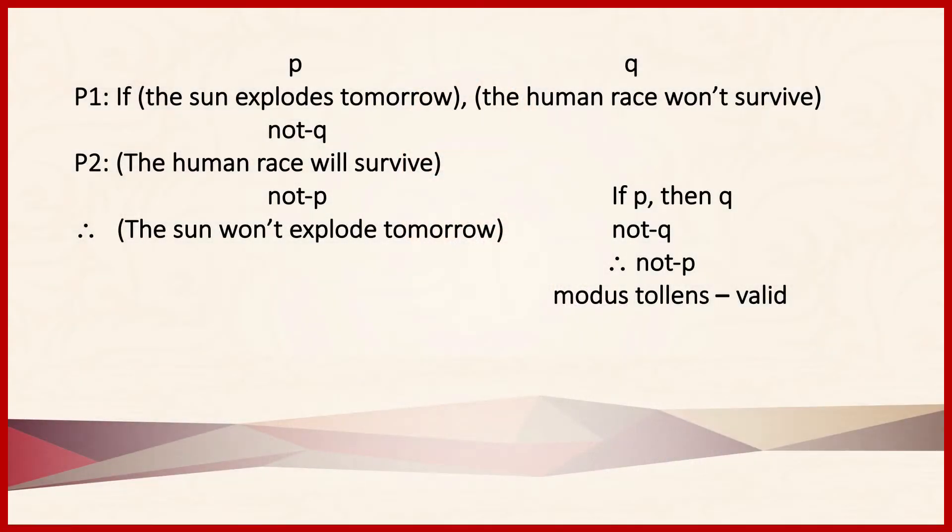In the first premise, we have the same proposition we've been working with: If the sun explodes tomorrow, then the human race won't survive. Premise two says the human race will survive.